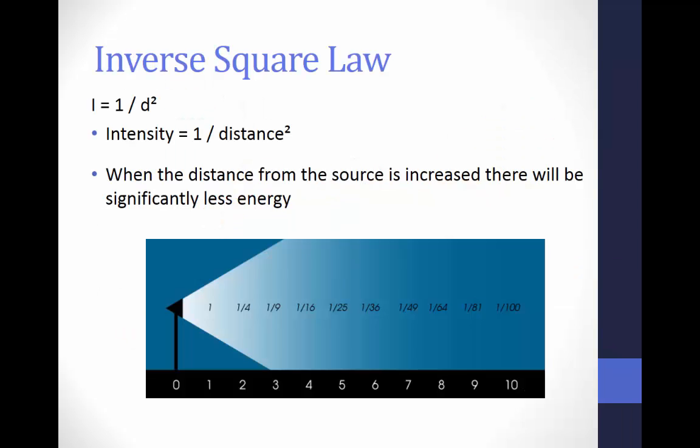In physics, an inverse square law is any physical law stating that a specified physical quantity or intensity is inversely proportional to the square of the distance from the source of that physical quantity. The fundamental cause can be understood as a geometric dilution corresponding to point-source radiation into three-dimensional space. The mathematical formula is: intensity equals one divided by the distance squared. We see examples of the inverse square law applied to modalities such as low-level laser light therapy and UV lamp therapy.